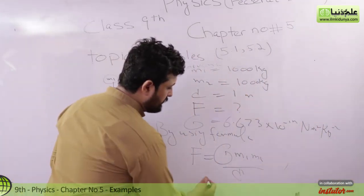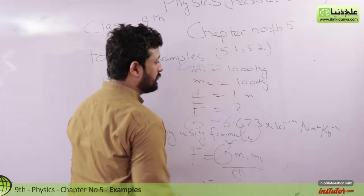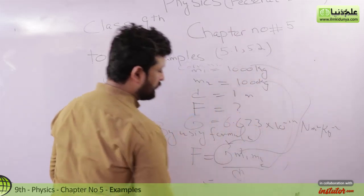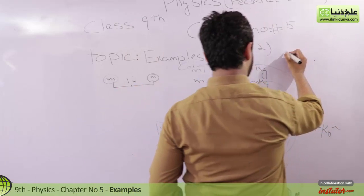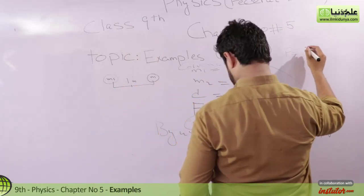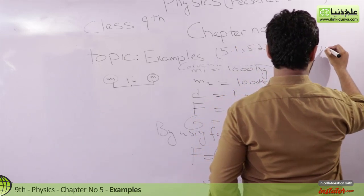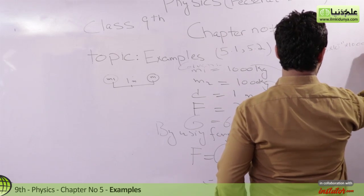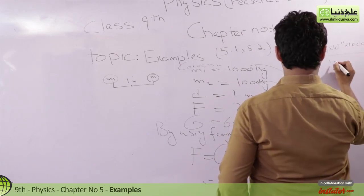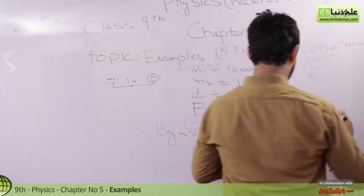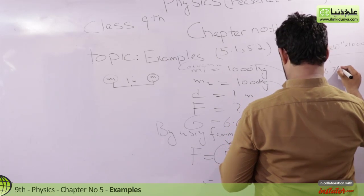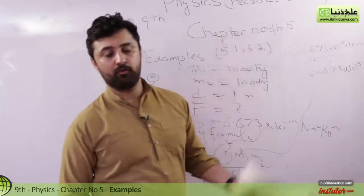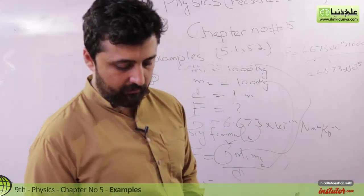You have to just put the values. F is equal to 6.673 multiply by 10 to the power minus 11 multiply by 1000 multiply by 1000 divided by 1. The answer is 6.673 multiply by 10 to the power minus 5 Newton, because force unit is Newton. So this is our example number 5.1.